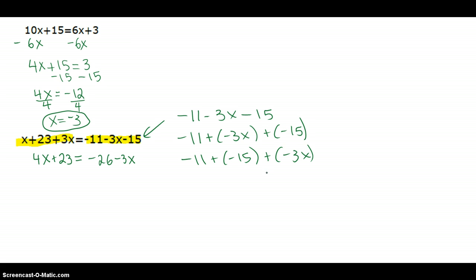So I just switch those. And you can see that's where I get the negative 26. You can call it a negative 26 plus negative 3x, or you can just say negative 26 minus 3x. So that's just a little side note on how I simplified that right side.